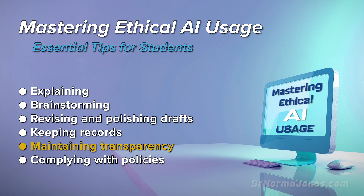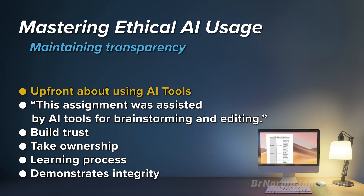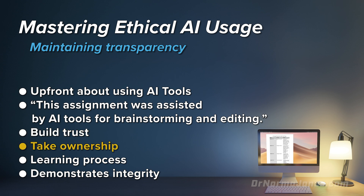In addition to keeping records, let's consider how we can maintain transparency in your AI usage. Transparency is crucial when using AI. Always be upfront about your use of AI tools in your work. For instance, if you have used AI to help brainstorm, explain concepts, or polish your drafts, mention it in your submission. This could be as simple as adding this note at the end of your paper: 'This assignment was assisted by AI tools for brainstorming and editing.' This builds trust with your teachers and shows that you're committed to ethical practices. Being transparent also helps you take ownership of your learning process and demonstrates your integrity.